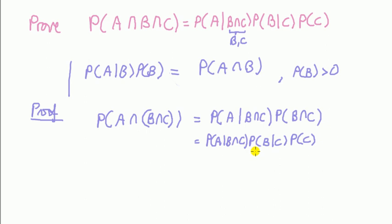I hear you asking, can I also, instead of writing B given C times probability of C, write probability of C given B times probability of B? And the answer is yes.